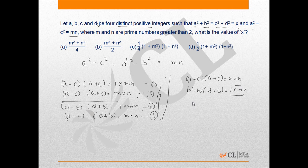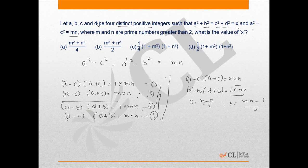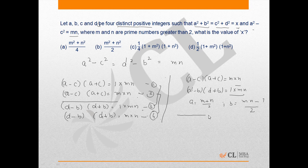if we solve this simultaneously, we will get a equals to m plus n by 2 and b equals to mn minus 1 by 2. And if we take the other case, we will get a equals to m minus n by 2.